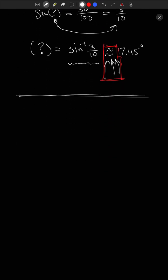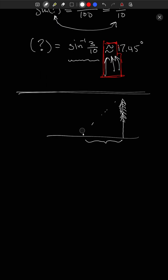Now let's do a more complex setup, still using the tree example to show the diversity of problems. This time, there's a river in the way, so you can't simply walk up to measure the distance from the tree. Instead, from where you're standing on your side of the river, you lie down and look at the top of the tree and observe an angle of elevation of 40 degrees.